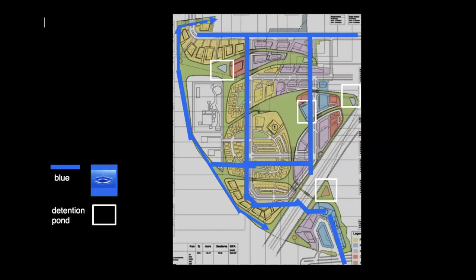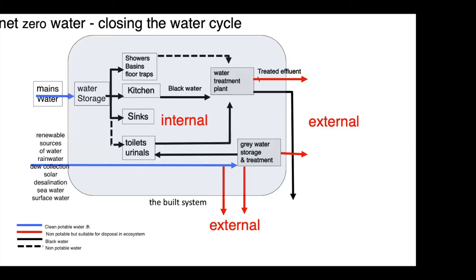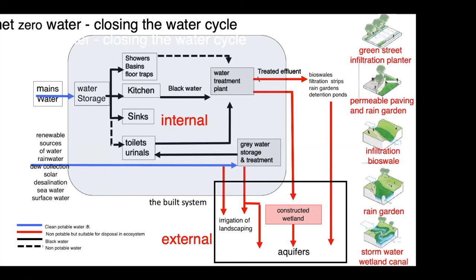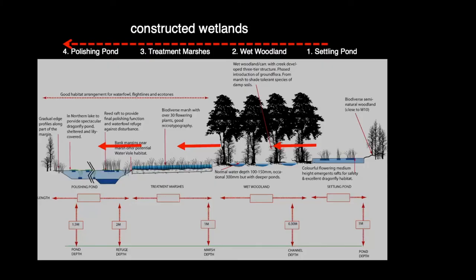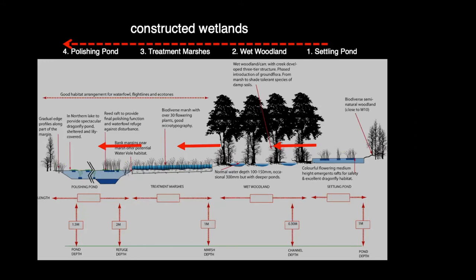For ecosystem hydrology, this is the water reticulation system, with white squares showing detention ponds where water is brought back into the ground. The whole idea is to close the loop as much as we can within the built environment. Anything we cannot reuse and recycle, we bring back into the ground through absorption wells, permeable paving, rain gardens, and so forth. For black water or sewage, we construct a wetland where water flows from one pond to another, being cleaned and filtered so that when it reaches the final pond, it should be almost potable.